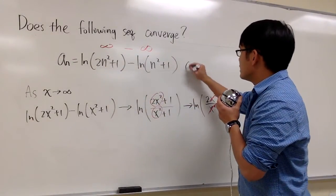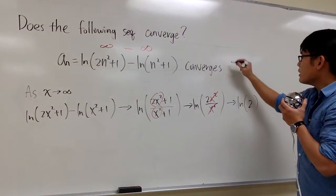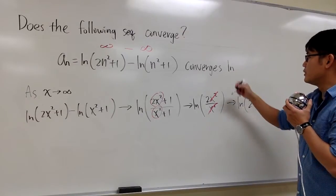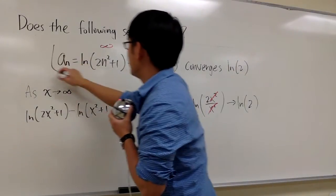this sequence converges because we have a finite value for the limit of the sequence. And it converges to ln(2). And this right here is it.